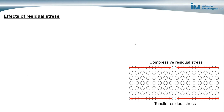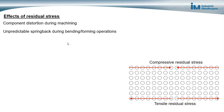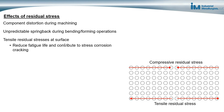There are a few different effects of residual stress. One is component distortion during machining — as layers of the metal are machined away, material with different elastic stresses is exposed, and the metal can distort. There can also be unpredictable springback during bending and forming operations, resulting in metals not having the desired shape.